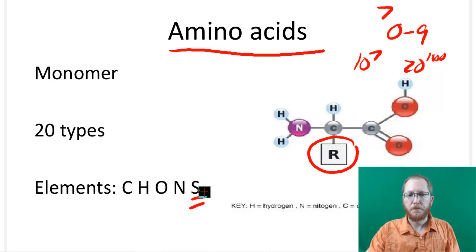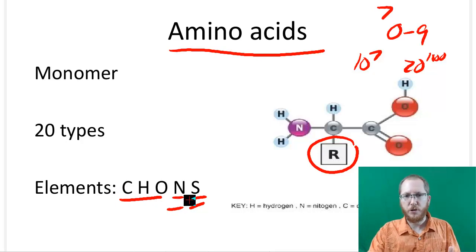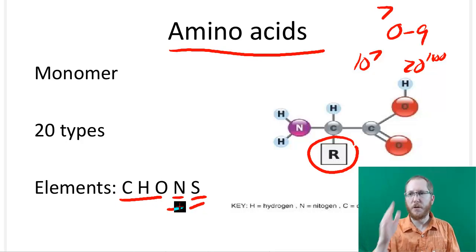So if you see sulfur, that's kind of a big key that it's likely going to be a protein in general because they are more prone to have sulfur than any of the other ones we talked about. And once again, they also will have nitrogen. So we already said lipids and carbohydrates had the CHO part, but the nitrogen and the sulfur will typically let you know that this specifically is going to be a protein.